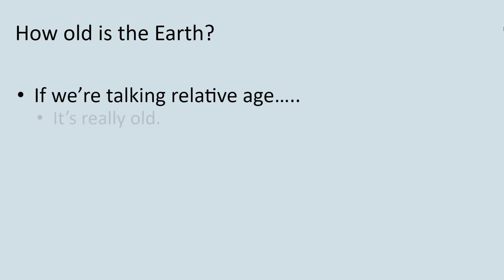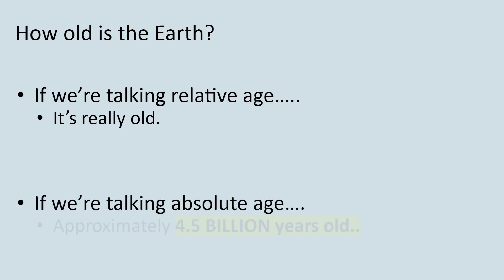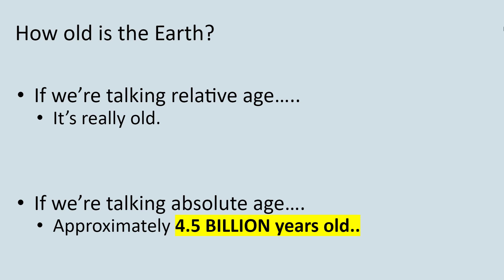If we're talking about relative age, we can say it's really old. If we're talking about absolute age, it's approximately 4.5 billion years old — that's billion with a B. When you consider that human life might go 75, 80, maybe 100 years, 4.5 billion years is a really difficult number to conceptualize, and the geologic time scale kind of helps us to do that.